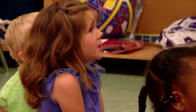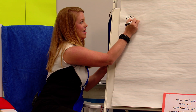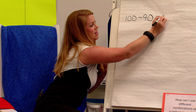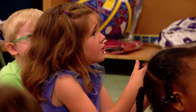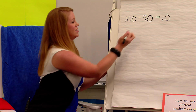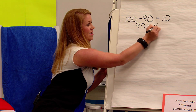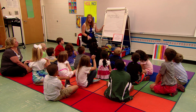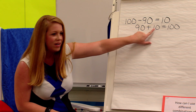Who has an idea about a way to make 10? Ava. 100 minus 90. How did you know that 100 minus 90 equals 10? Because 90 plus 10 equals 100, and minus 90 equals 10. I love that. So Ava said she knew that 90 plus 10 equals 100, so if she started with 100 and took away 90, she would have 10.